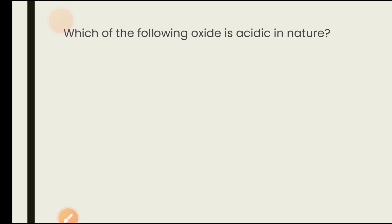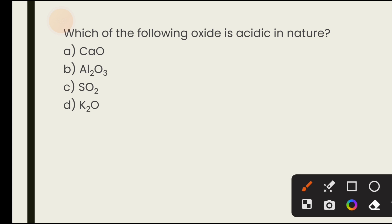Which of the following oxide is acidic in nature? Options are calcium oxide, aluminium oxide, sulfur dioxide, potassium oxide. Oxides made from non-metals are acidic in nature. Sulfur is the only non-metal here, so sulfur dioxide is the acidic oxide. The answer is sulfur dioxide.